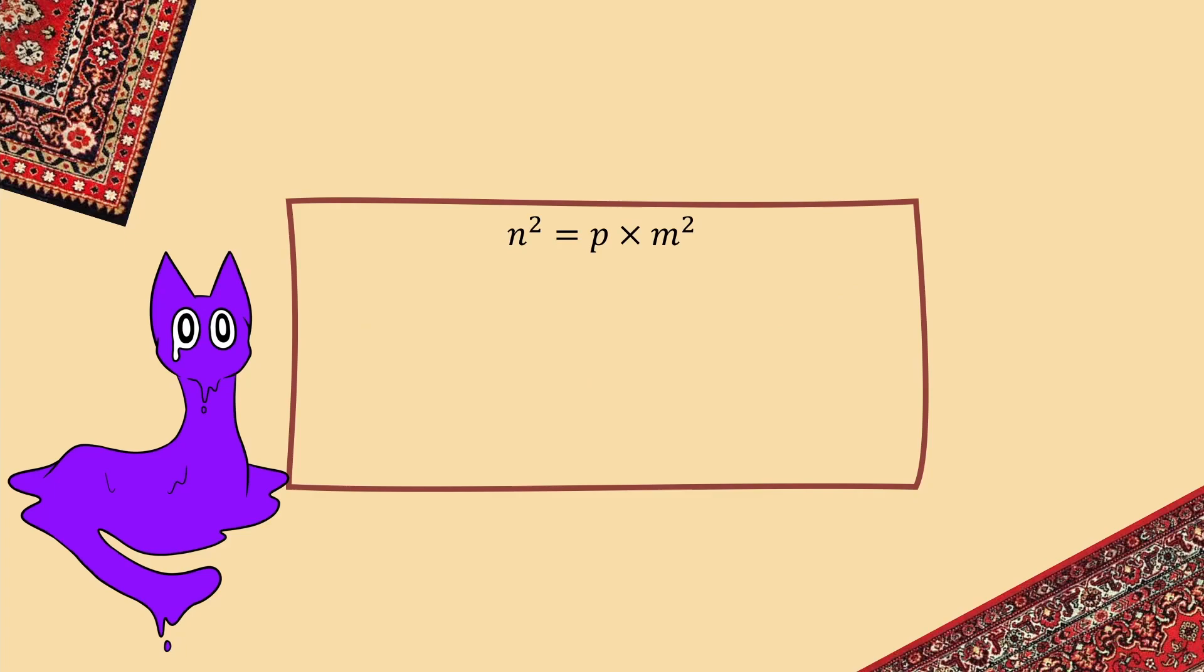When you expand m squared out, and multiply it by that prime number, that prime factor is automatically to an odd power, meaning that P times m squared cannot be a square number, and that there is no rational root to that prime number, or any prime number, for that matter.